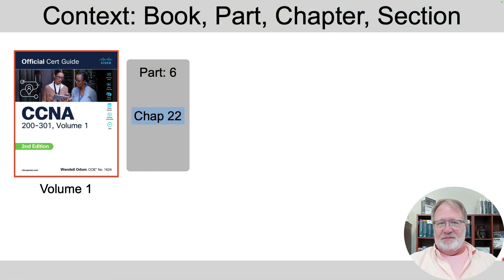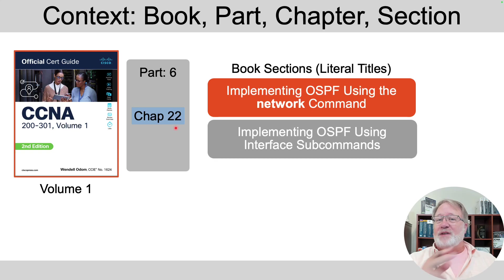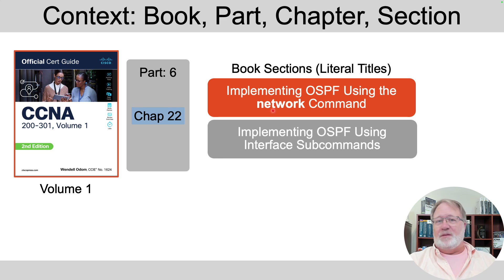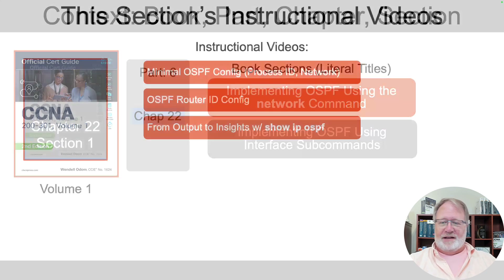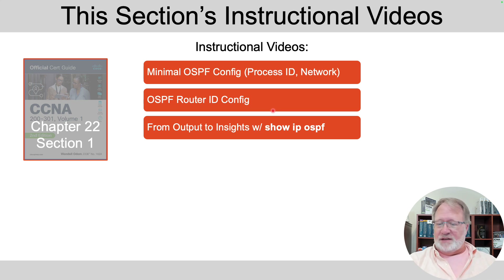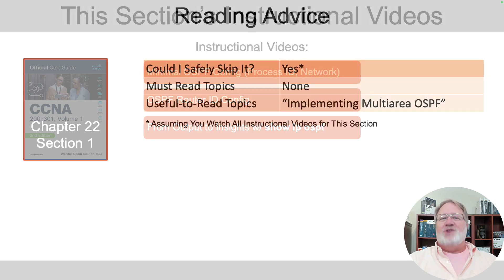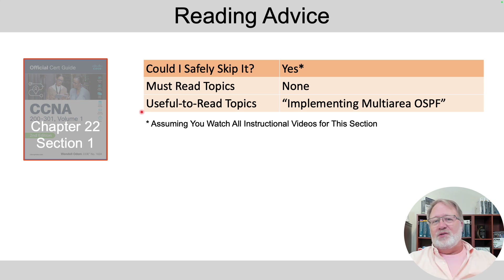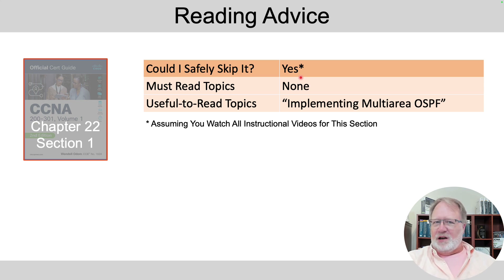Let's talk about the CCNA exam. If you're using the Cisco Press Cert Guides, look for Volume 1, Chapter 22. There are two major sections in that chapter; we're covering the first one, which references the network command but also covers router ID settings. I made three videos related to that section — this is the second. If you watch all three instructional videos, you can safely skip that section of the book, as the videos are comprehensive to the book section.